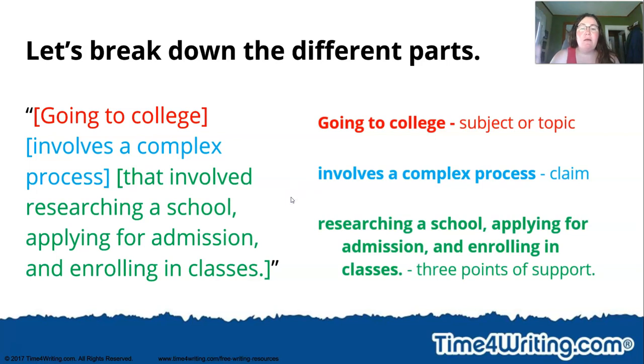And then researching a school, one; applying for admission, two; and enrolling in classes, three, are my three points of support. So I'll have a body paragraph all about how you research a school, a body paragraph all about applying for admission, and a body paragraph about enrolling in classes. Breaks it down. Makes sense. You know what to write about. Your reader knows what they're going to read about.